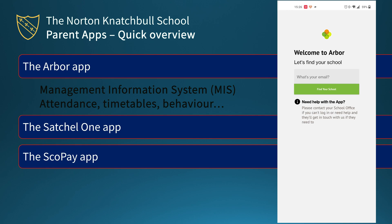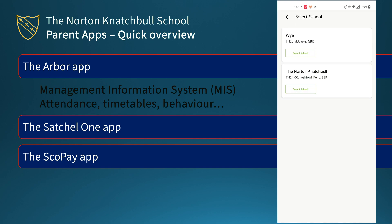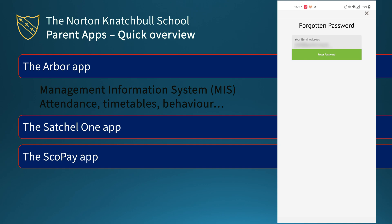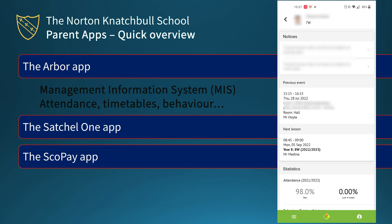When you launch the app for the first time, the first thing to do is to enter your email address. If your email address is stored on our system, it should list Norton Natural School amongst the schools listed. My email address is actually registered at two schools that use Arba. If you know your password, enter it. If not, click 'Forgotten Password' and that will send an email to reset your password. Once you have your password entered, that will take you into the app.